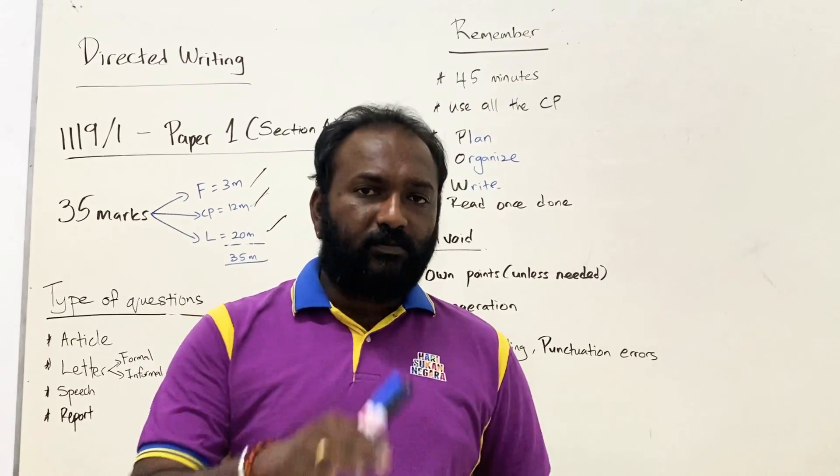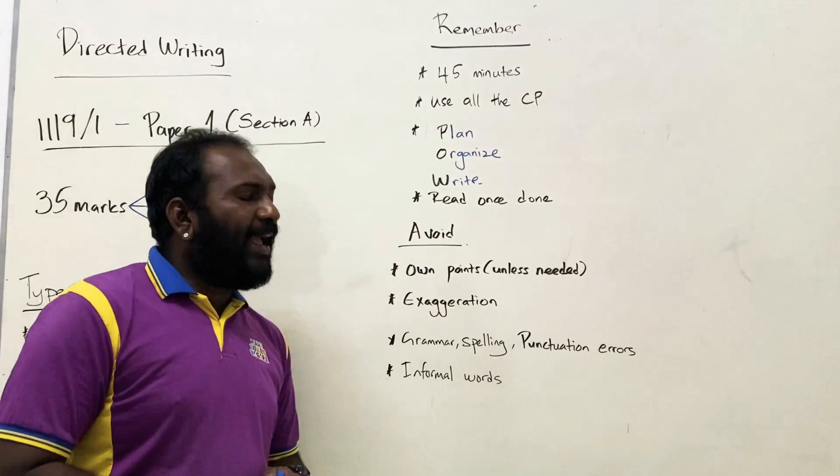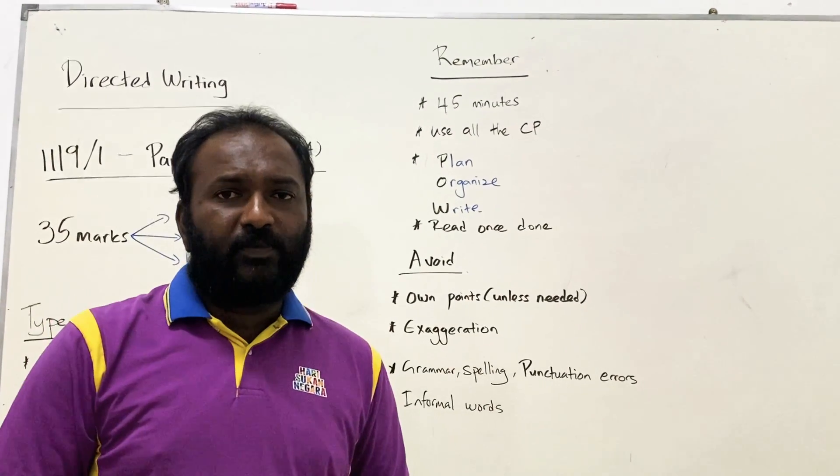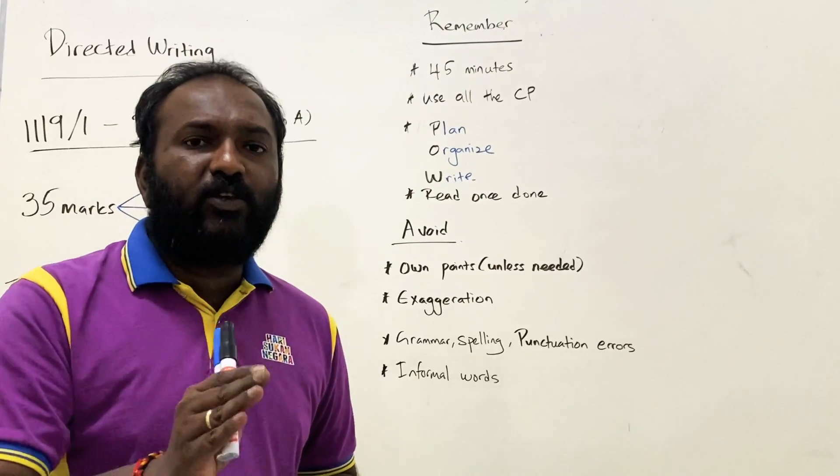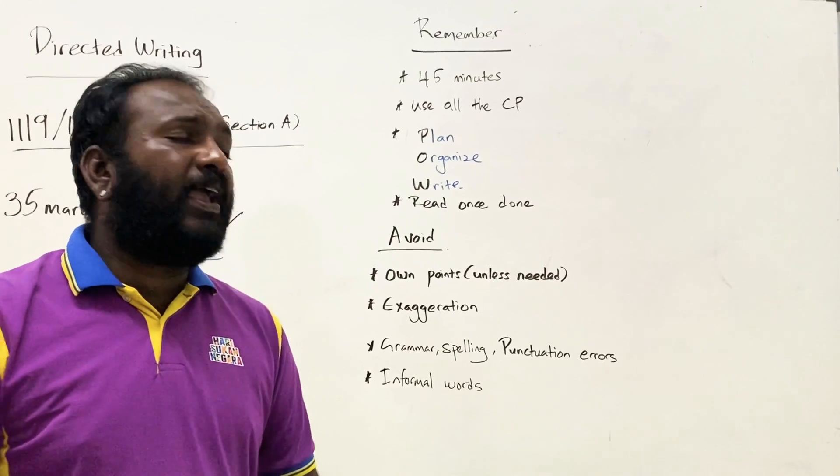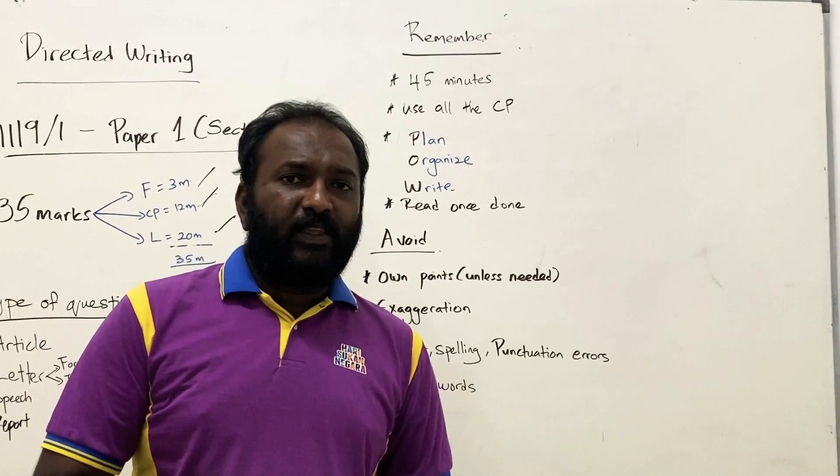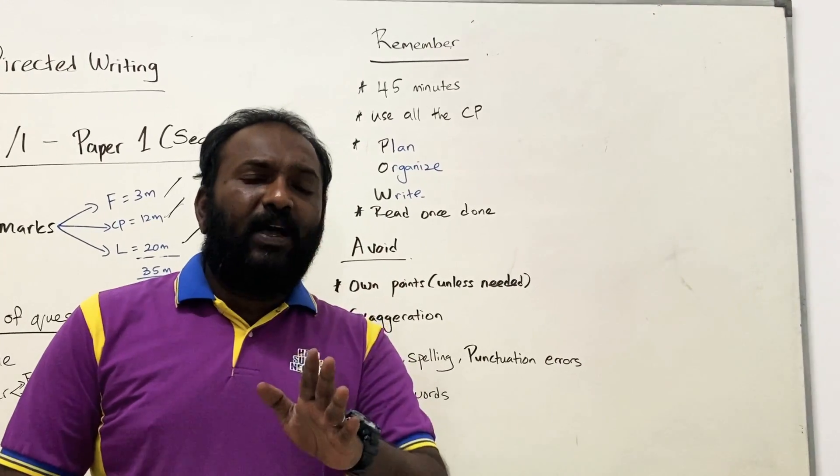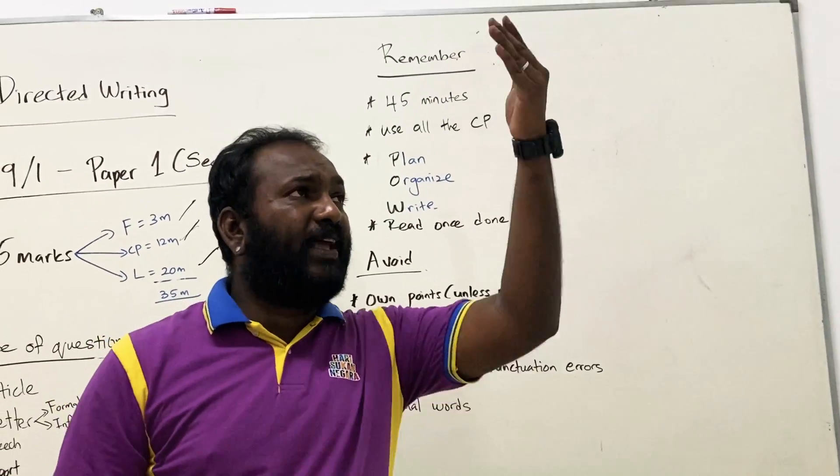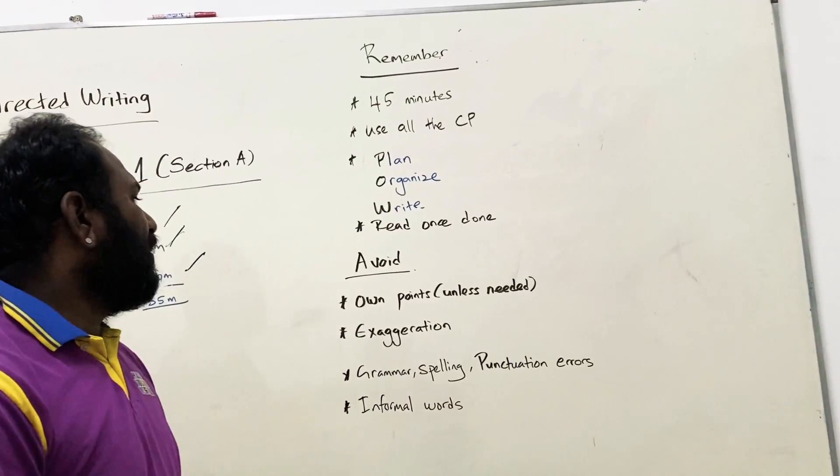Next, what are the things that you must avoid? Number one, please do not add own points unless the question asks you to do so. If the instruction didn't state that you have to add your own point, please do not give any own points because no marks are provided for your own points. The content point marks are only given for the given content points, not for your own points. Even if you give ten of your own points, we don't even give one mark.